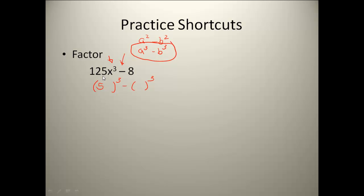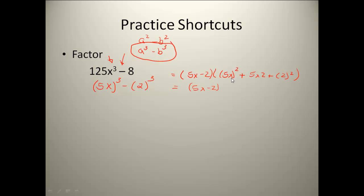To get 125, I need a 5; to get x³, I need an x; and to get 8, I need 2 cubed. Then I follow my pattern: a minus b gives me (5x - 2). Then a² gives (5x)², plus a times b gives 5x times 2, and plus b² gives 2². When I simplify: (5x)² becomes 25x², 5 times x times 2 is 10x, and 2² is 4. So my fully factored answer is (5x - 2)(25x² + 10x + 4).